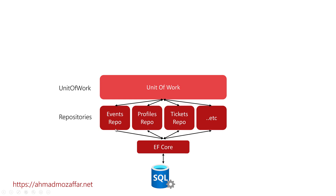We will put all these repositories together in one place provided to the services layer — this is called Unit of Work. Unit of Work is similar to DbContext in Entity Framework: just as DbContext contains a set of DbSet properties representing tables, Unit of Work will expose all repositories like tickets, profiles, and events to the services layer — but as abstractions via an IUnitOfWork interface, with the concrete implementation specific to Entity Framework.